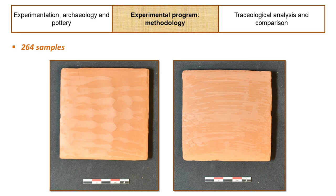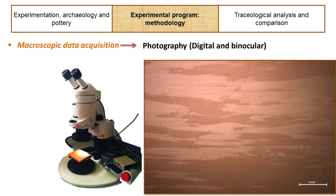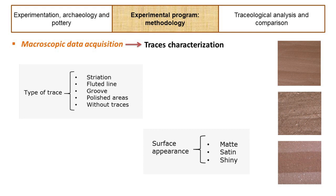The samples are photographed with a binocular loupe and analyzed macroscopically. We can identify traces according to their nature — for example, grooves, flood lines, striations, and polish areas. We also give importance to the appearance of the surface: matte, satin, or shiny.